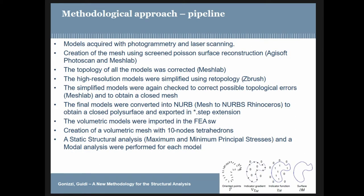The full pipeline was: acquisition and mesh creation with Agisoft Photoscan for photogrammetry, MeshLab, Polyworks, or GeoMagic for laser scanning. Then correction of topology using MeshLab, which is quite good for topology correction. The retopology was done using ZBrush because it's really stable. I also tried Instant Meshes, an open-source software made by ETH Zurich and CNR Italy, but I had some topology correction problems there. After retopology there was another correction and control of topology.